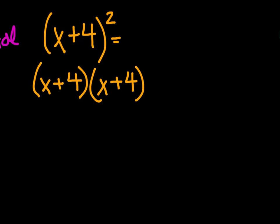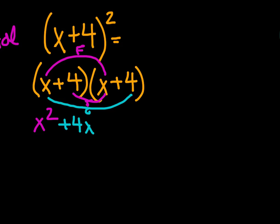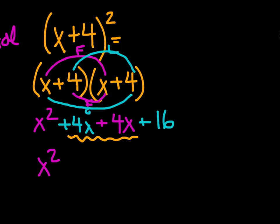That becomes x plus 4 times x plus 4. We can do our FOIL method. Here's our first terms, we have x squared. We then have our outside terms, which are plus 4x. We have our inside terms, so we have plus 4x. And our last terms, 4 times 4 is 16. After that, we can group our like terms. So we have x squared plus 8x plus 16.